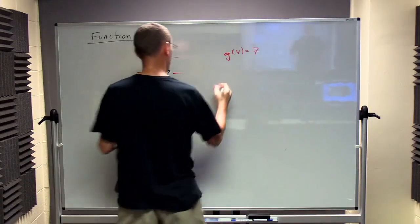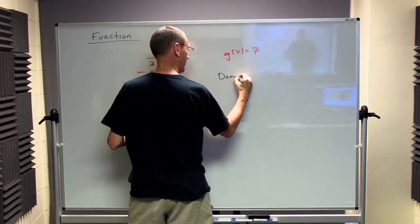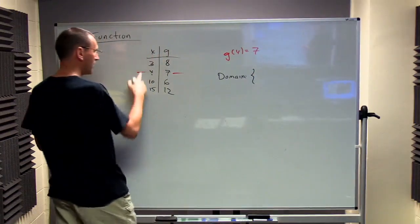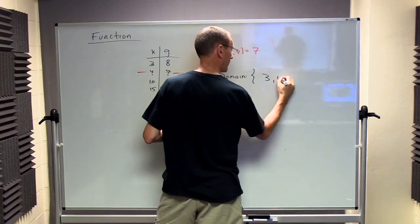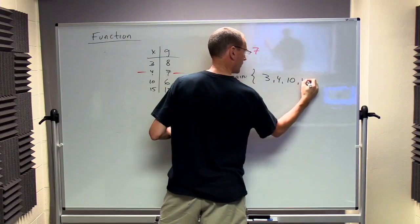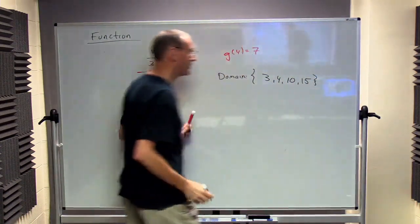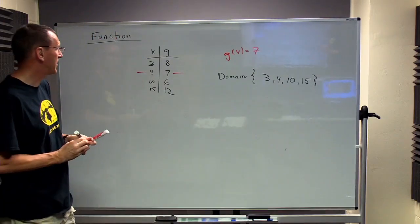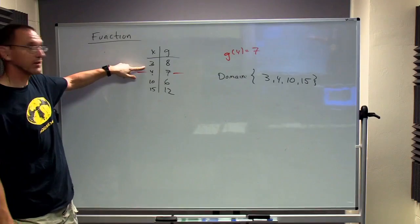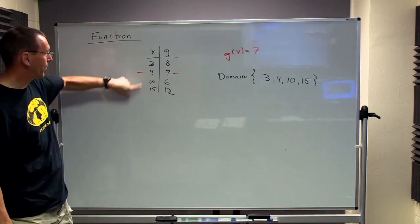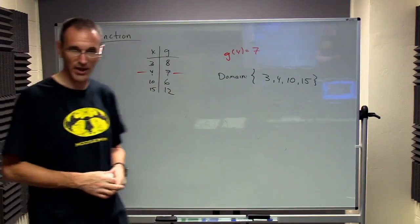What's the domain? In this case, the domain is all possible inputs are 3, 4, 10, and 15. And I'm not using any kind of interval notation here because these are discrete numbers. I can't put in 3.17. I could only put in 3, 4, 10, or 15. So it's not an interval.